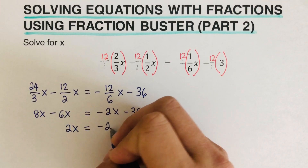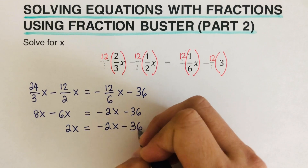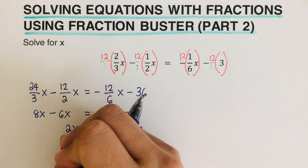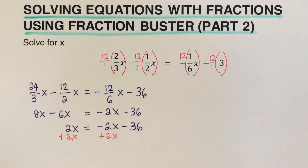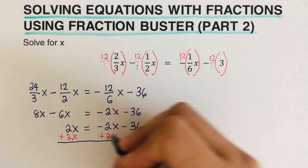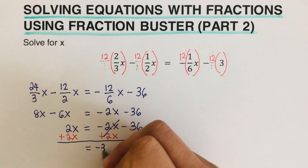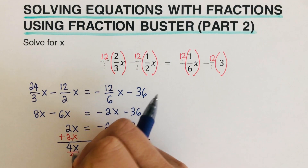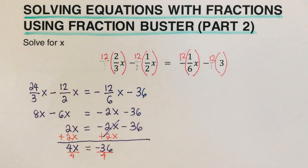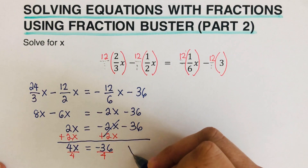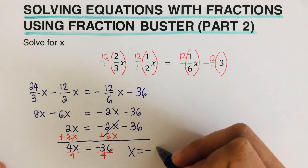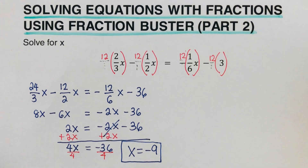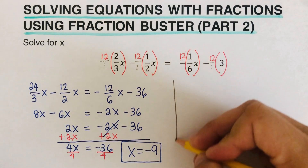So we have 2x equals negative 2x minus 36. We add 2x to both sides, giving 4x equals negative 36. Dividing both sides by 4, our final answer is x equals negative 9.